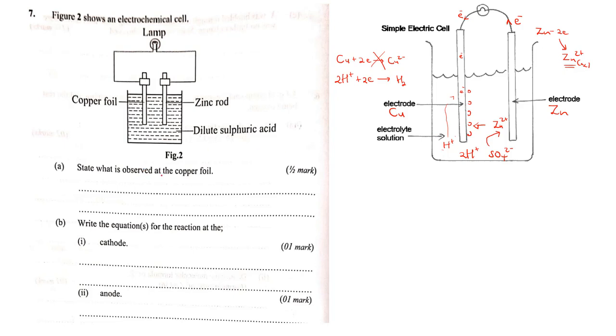The first question is what is observed at the copper foil? It will be this hydrogen gas that will be observed. Because gases in solutions will be seen as bubbles of that given gas and hydrogen is colorless, the observation will be bubbles of a colorless gas. You can also say effervescence, but when you say bubbles of a colorless gas, we are specific the gas is colorless. Some people will hear a hissing sound, but this option could be the best. Bubbles of a colorless gas.